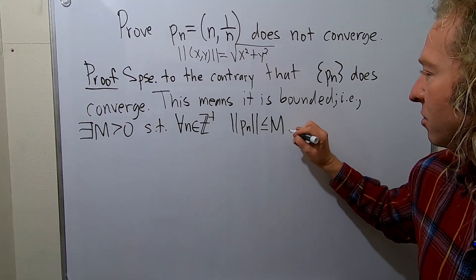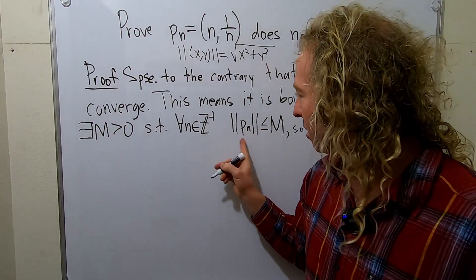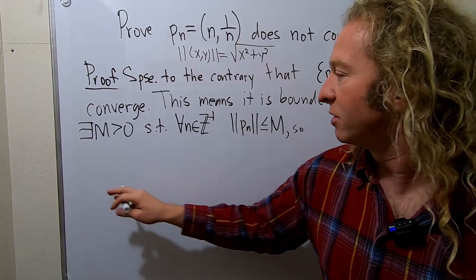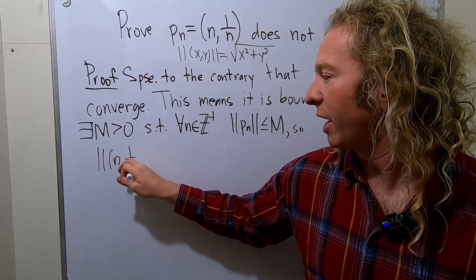So what does this mean? So in other words, let's rewrite this. So it's the magnitude of this. So it's the magnitude of n comma 1 over n.